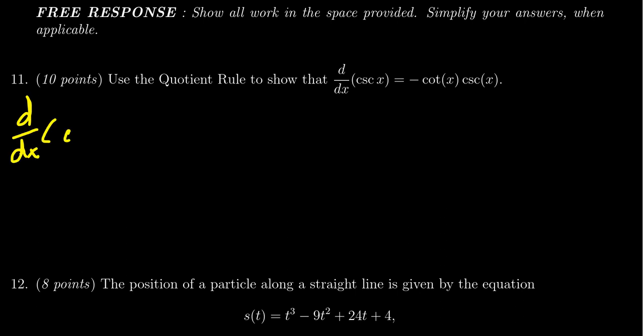Well, it tells us we should use the quotient rule. So how does the quotient rule come into play? We have to write cosecant as a quotient. So cosecant, notice, is 1 over sine of x. It's the reciprocal of sine. In which case, now we can use the quotient rule to take the derivative.